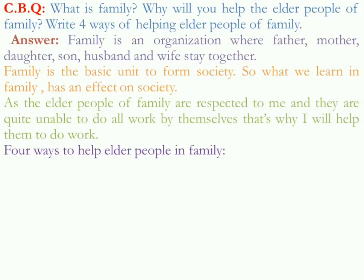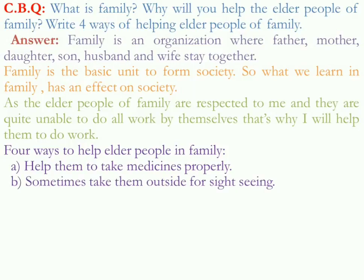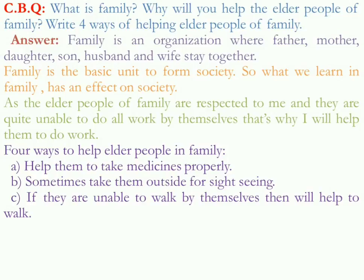Four ways to help elder people in the family. Number one: help them to take medicines properly. Sometimes elder people forget which medicine to take and at what time, so we can help them to take medicines timely and properly. Number two: sometimes take them outside for sightseeing. Staying at home all the time is boring, so taking them outside for refreshment is better for them. Number three: if they are unable to work by themselves, help them. Some elder people are very weak or physically unfit, so we can give them support to work.